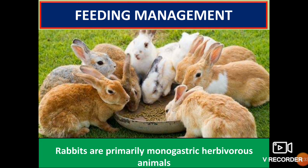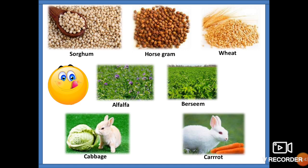Rabbits are primarily monogastric herbivorous animals and consume common grains and pulses like sorghum, horse gram, wheat and grasses like alfalfa, berseem, and vegetables like cabbage, carrot and kitchen waste. Green forages including lucerne, berseem, paragrass, sesbania leaves, moringa leaves and agati leaves are best suited.